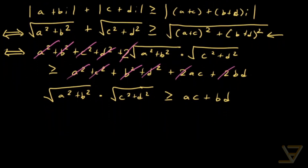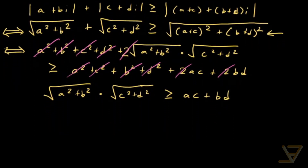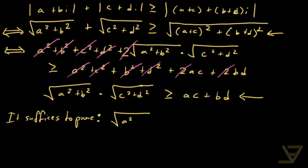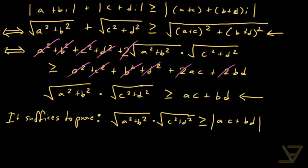It's tempting to square both sides again, but we can't quite do that because the right side is not necessarily non-negative, so that step wouldn't be reversible. What we can say is that it suffices to prove that √(a² + b²) · √(c² + d²) ≥ |ac + bd|, because if we prove this, then we can conclude it's also ≥ ac + bd.